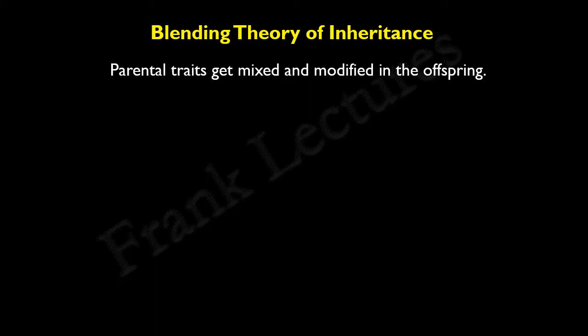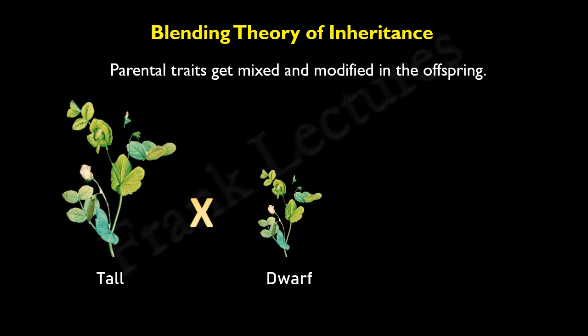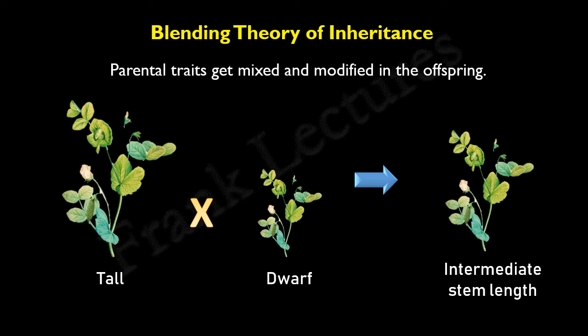Prior to Mendel's work, there were many theories to explain heredity. One of them was the blending theory of inheritance. According to this theory, parental traits get mixed and modified in the offspring, and the offspring produced have an intermediate trait. For example, if a tall pea plant and a dwarf pea plant are crossed, the offspring should be neither tall nor dwarf but of intermediate stem length. Mendel's experiments proved that this theory of blending inheritance was not correct.